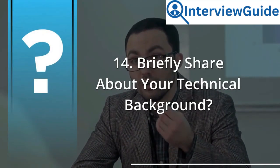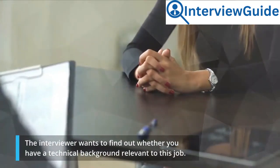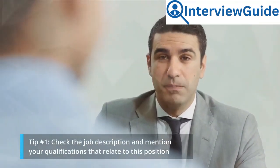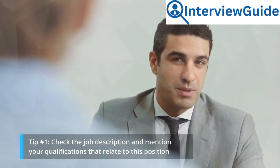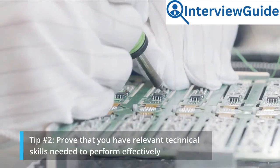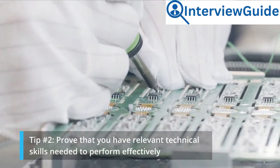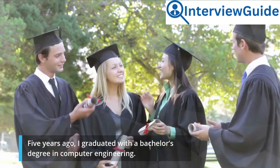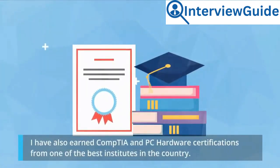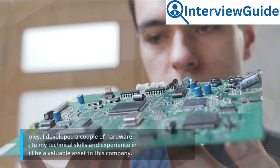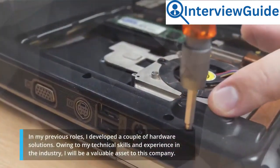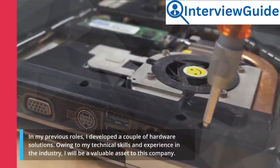Question 14: Briefly share about your technical background? The interviewer wants to find out whether you have a technical background relevant to this job. Tip number 1: check the job description and mention your qualifications that relate to this position. Tip number 2: prove that you have relevant technical skills needed to perform effectively. Sample answer: 5 years ago, I graduated with a bachelor's degree in computer engineering. I have also earned CompTIA and PC hardware certifications from one of the best institutes in the country. In my previous roles, I developed a couple of hardware solutions. Owing to my technical skills and experience in the industry, I will be a valuable asset to this company.